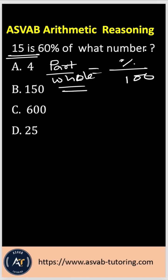So you have to find the 'of what number,' that means you have to find the whole. So let's plug that value in here. That gives you 15 over x equals 60%, so that is 60 over 100.